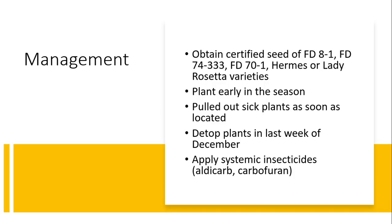For disease management, use certified seed of resistant or tolerant varieties such as FD-81, FD-74333, and FD-701, which are resistant and tolerant varieties against potato leaf roll virus. Early planting in the season is also important for escaping the disease.